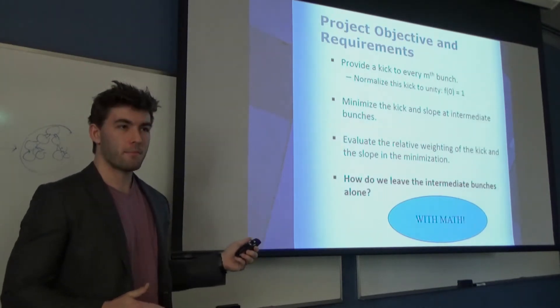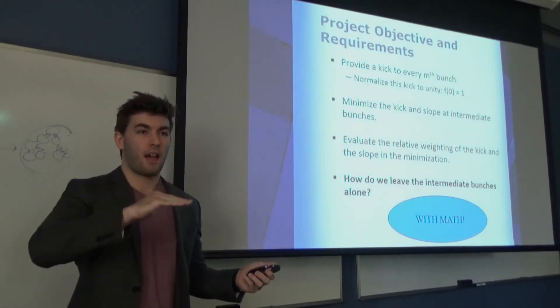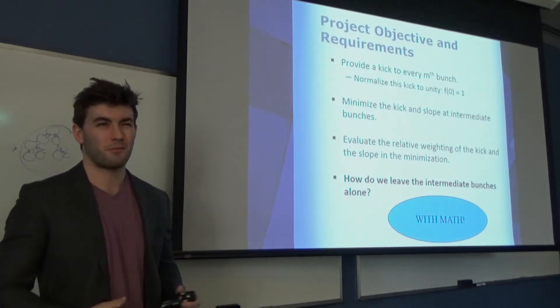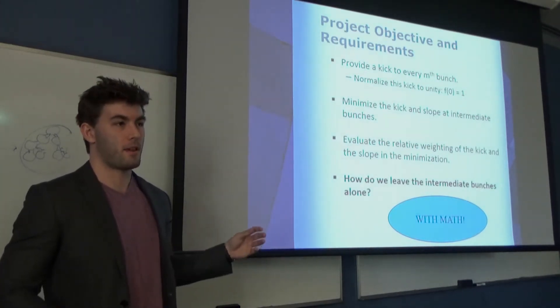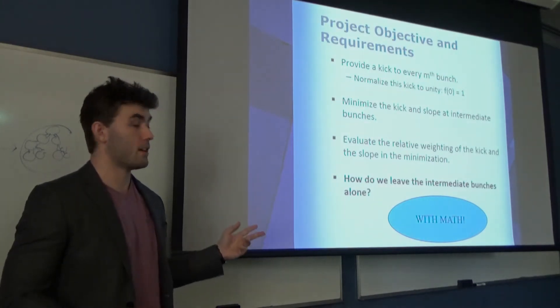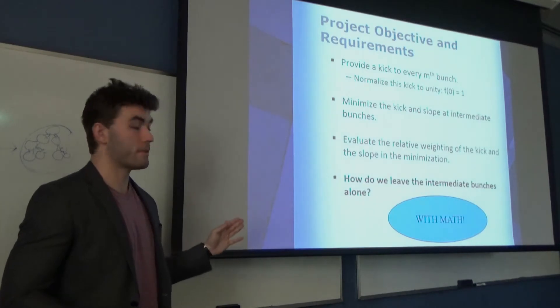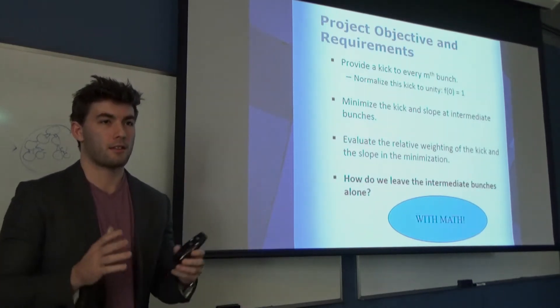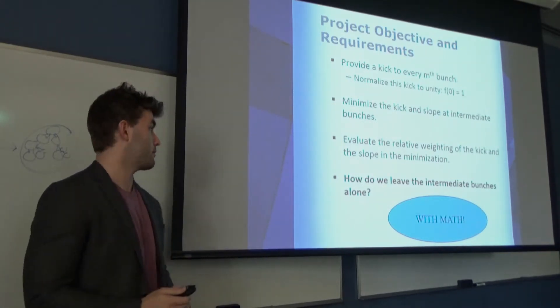What I want to do here is I want to provide a kick to every 11th bunch. For clarity, I want to make it a unit kick. And I also want to reduce the slope and kick at all of the bunches that aren't the 11th. Why the slope is important? If you're kicking the intermediate bunches, adding slope to the term gives a little bit of a seesaw action going on. We don't want that either. There's no physical reason to suspect that both the kick and the slope should be weighted equally. So another goal of this project is to create a Pareto front that can compare how much the kick and the slope terms really affect the solution.